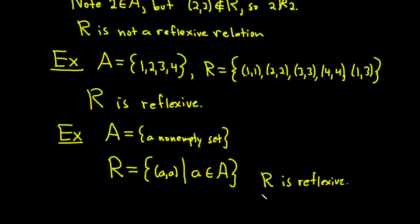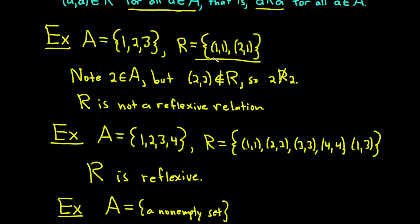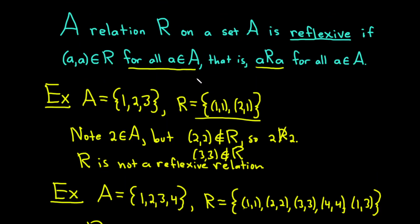So a relation is reflexive if every element of A is related to itself. So that's the key. In our first example, that was not the case because, for example, (2,2) was not in R. Also, 3 is in A and (3,3) is not in R. So every element has to be related to itself.